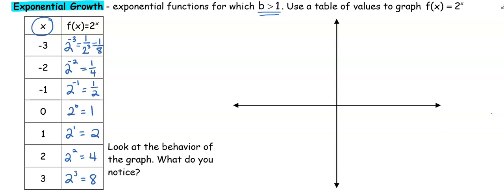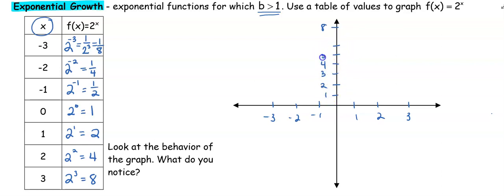So we have our table of values and we're going to go ahead and plot this. On our x-axis we're going from negative 3 to positive 3, and we're going all the way up to 8 on the y-axis. Our first point is at negative 3, 1/8 — that's way down here. Negative 2, 1/4 — still way down here. Now we're at negative 1, 1/2; then 0, 1; then 1, 2; 2, 4; and 3, 8.